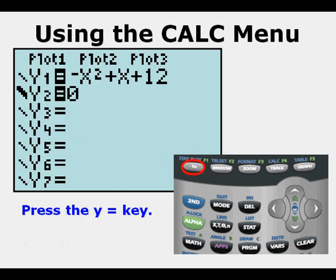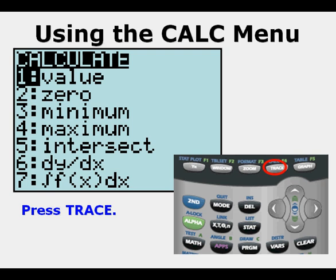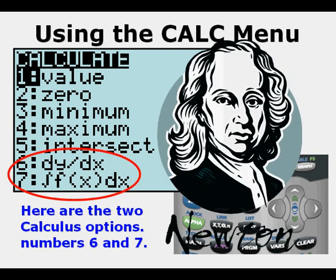Press the y equals key to get to the function editor. Press the clear key to clear out the function out of y2. Now we'll look at yet another option in the calc menu. Press second. Press trace to get to the calc menu.